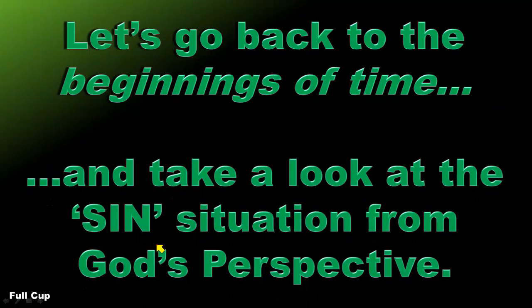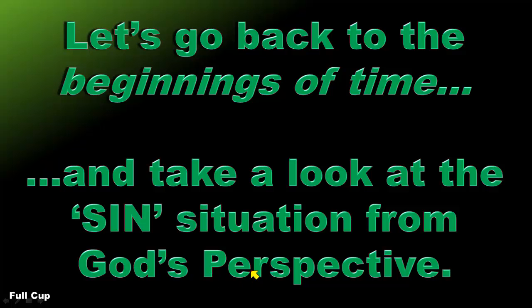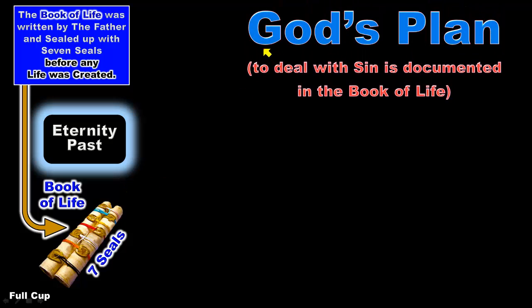To explain this, let's go back to the beginning of time and look at the sin situation from God's perspective — how he planned on dealing with sin. From eternity past, God the Father, the Son, and the Holy Ghost, before they created any life, God the Father wrote the book of life, sealed it with seven seals, and those seals were sealed through many thousands of years. They've just started to be opened. God wrote his plan on how to deal with sin and documented it in the book of life.